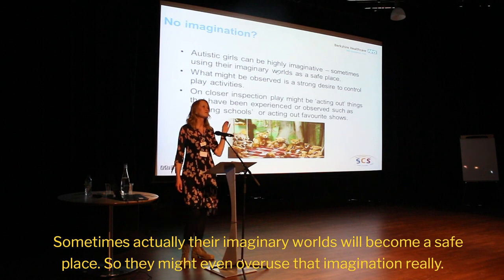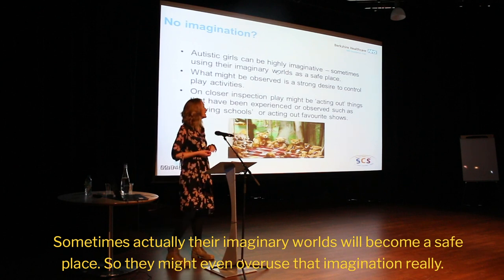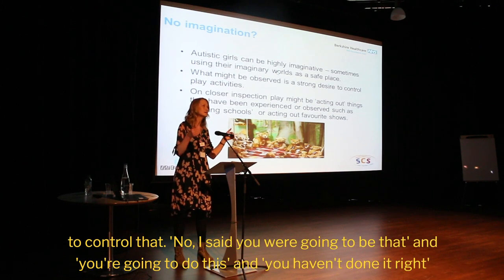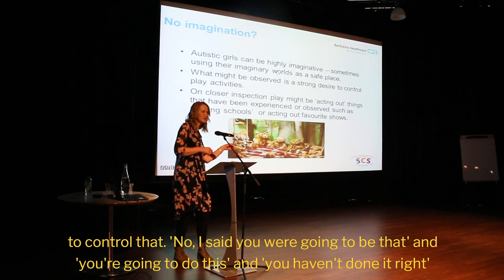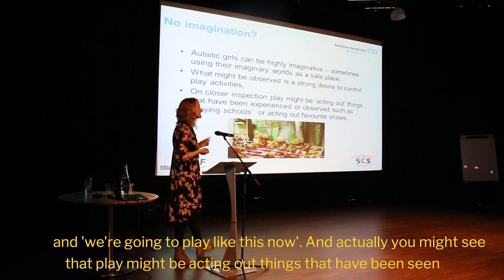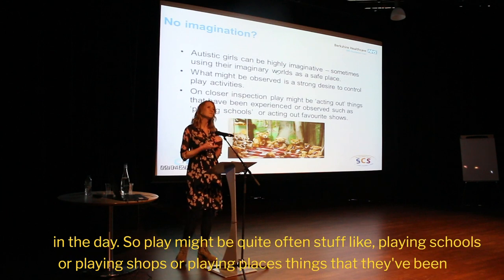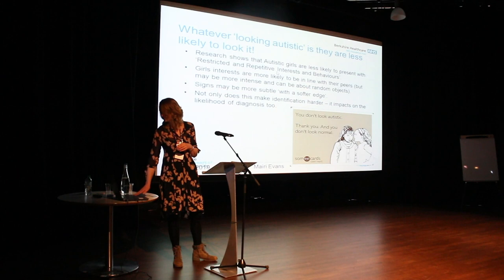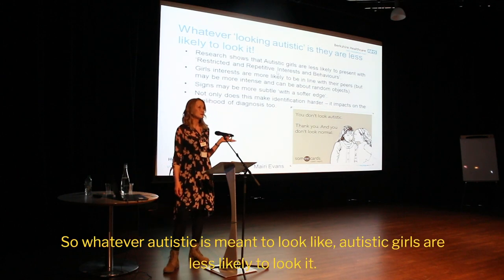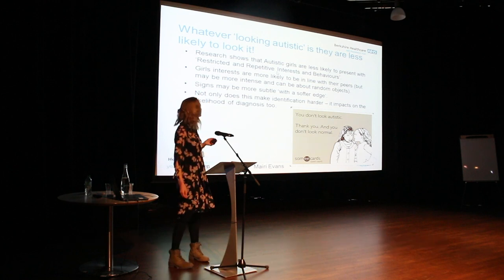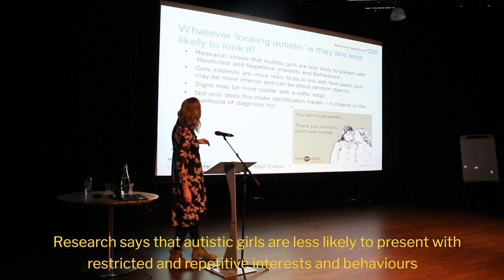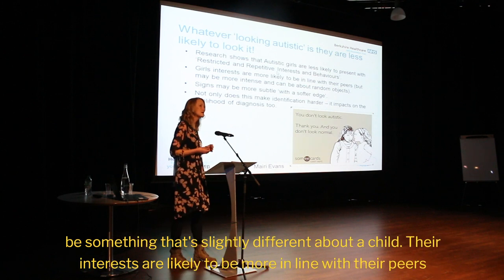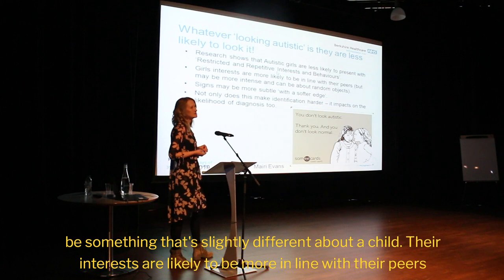Sometimes their imaginary worlds become a safe place, so they might overuse imagination. Whilst they play with other children using imaginary games, they might have a strong desire to control that play — 'I said you were going to be that, and you're going to do this, and you haven't done it right.' Play might often involve acting out things from the day — playing schools, playing shops. Whatever Autistic is meant to look like, Autistic girls are less likely to look like it. Research says Autistic girls are less likely to present with restricted and repetitive interests and behaviours — the things other people are more likely to spot.